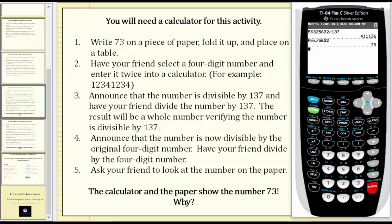Finally, step five, ask your friend to look at the number on the paper. The calculator and the paper show the number 73. So the question is, why does this always work when the first number is a four-digit number entered twice?